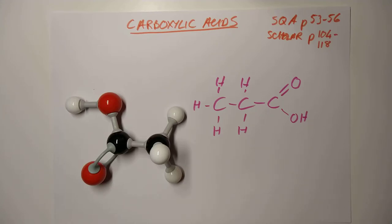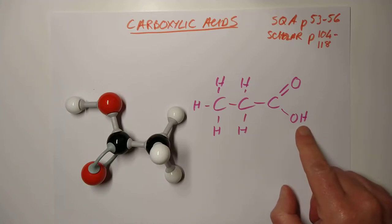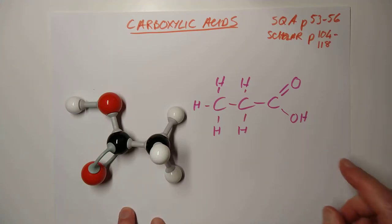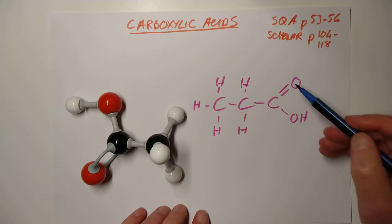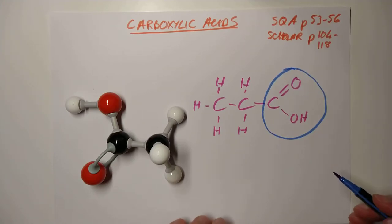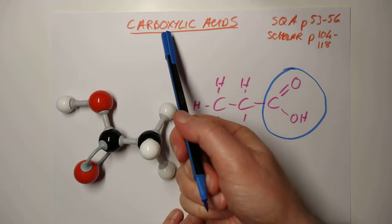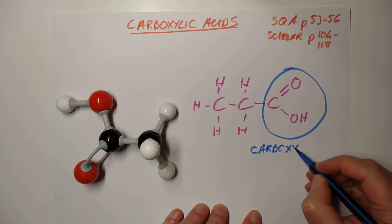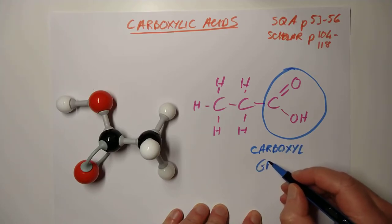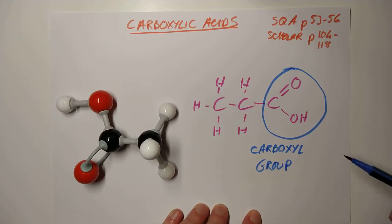This is the recognisable part - this is the functional group of a carboxylic acid. You did need to know the name of the OH when it was by itself in an alcohol - that was a hydroxyl group. Let me check the notes. Yes, you do need to know this name. This here is the carboxyl group. That's where they get their name from. You find it in all carboxylic acids at the end of the chain.